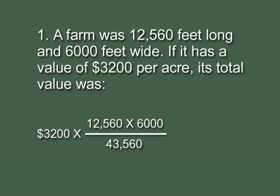So when we take the 12,560 times 6,000 over 43,560, we're finding the number of acres. Each acre is $3,200, so we end up with $5,536.08 or 9 cents, depending on how you want to calculate it.